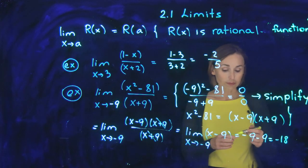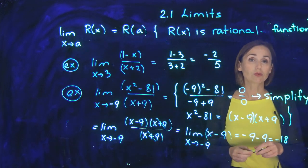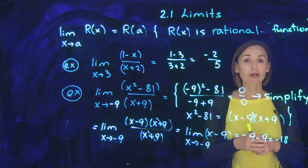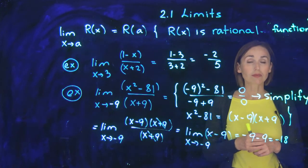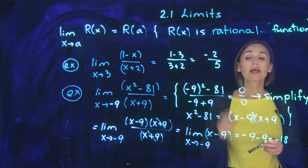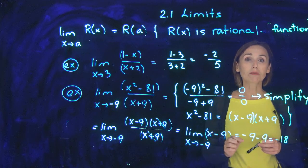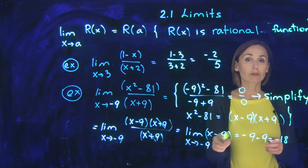So once again, if you plug in this value that you have for x to the rational function and the result is 0 over 0, you can stop here. This is the sign for you to simplify your rational function. And only after you simplify it, plug in this value to the simplest form of your function.